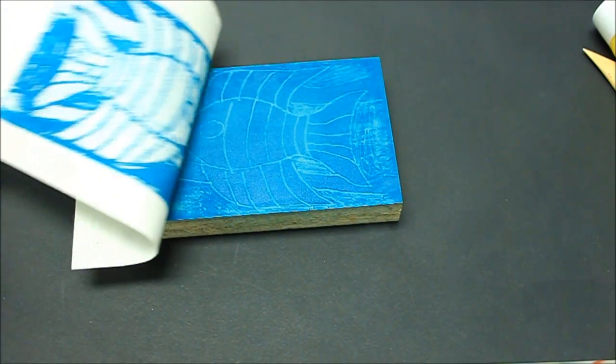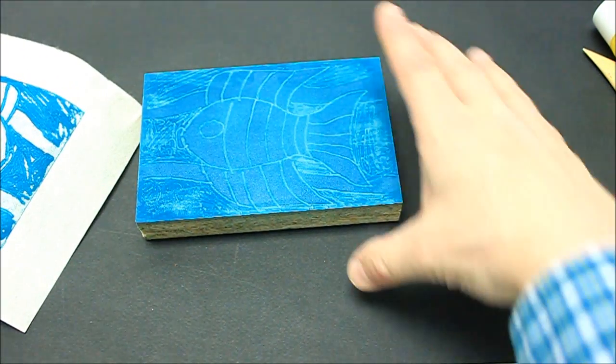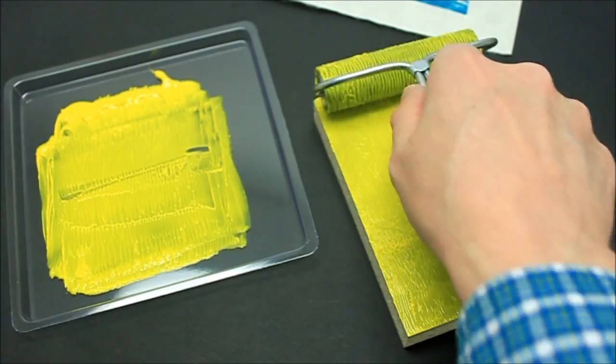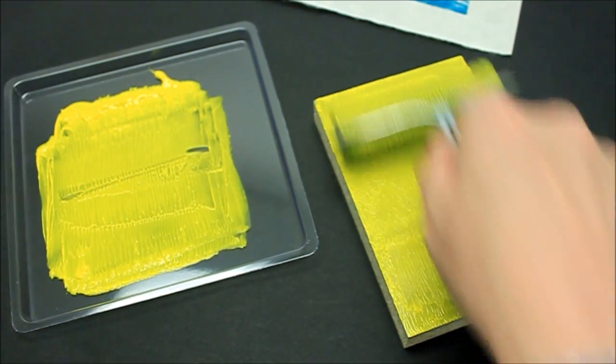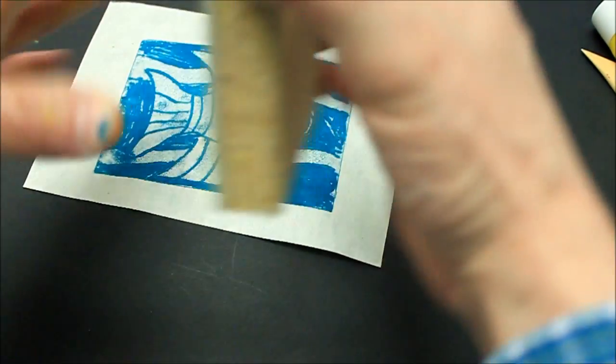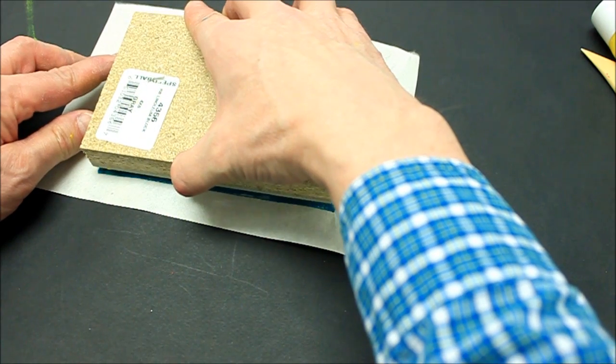Peel off the paper. Ink your second color. Pick up the block and align it carefully for accurate color registration.